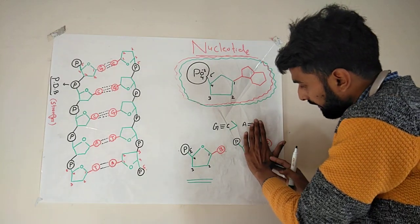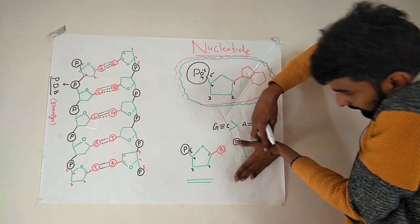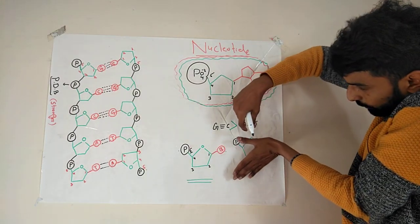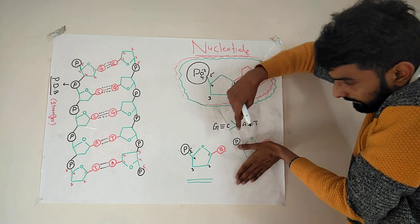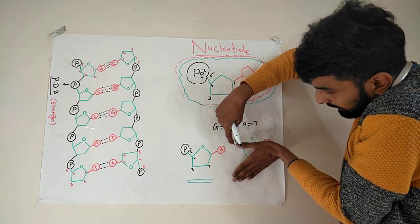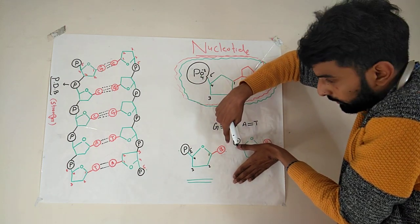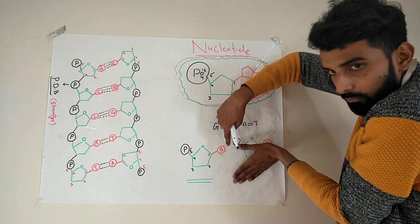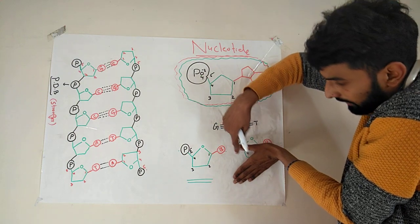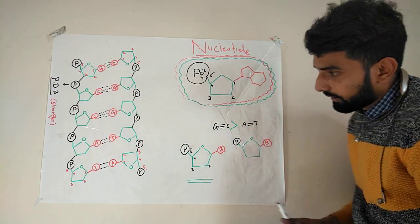Now what will happen: this nucleotide will turn over like this. Now you can see both the bases are very close to each other, and it's much easier for them to make a bond with each other. The oxygen has moved downward.